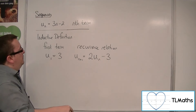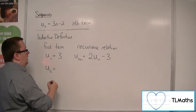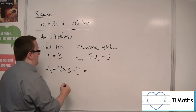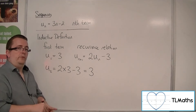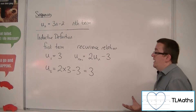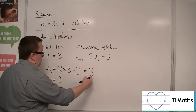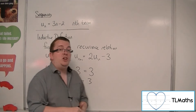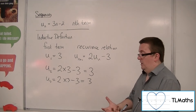From that, you can work out that u2 will be two lots of the previous term take away 3, so 6 take away 3, which is 3 as well — it just so happens. Then u3 would be two lots of the previous term take away 3, which is 3 again. So this is actually generating what would be referred to as a constant sequence, because it is, well, constant — non-changing.